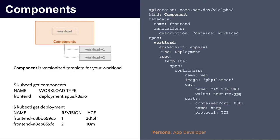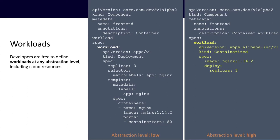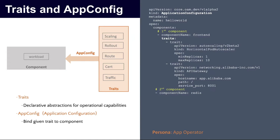All these concepts are defined by the Kubernetes API resource model. For example, a component is essentially a template object for your workload. If the developer modifies the component YAML, it will generate a new immutable revision of the deployment. The workload section in the component YAML is fully pluggable, so you are free to define any level of abstraction — Kubernetes deployment or a cloud-native service — it's up to you. For traits and application configurations, there are Kubernetes API resources available. The application configuration references components like front-end and Redis and binds traits like Autoscaler and API Gateway to them, serving as a self-contained application definition.